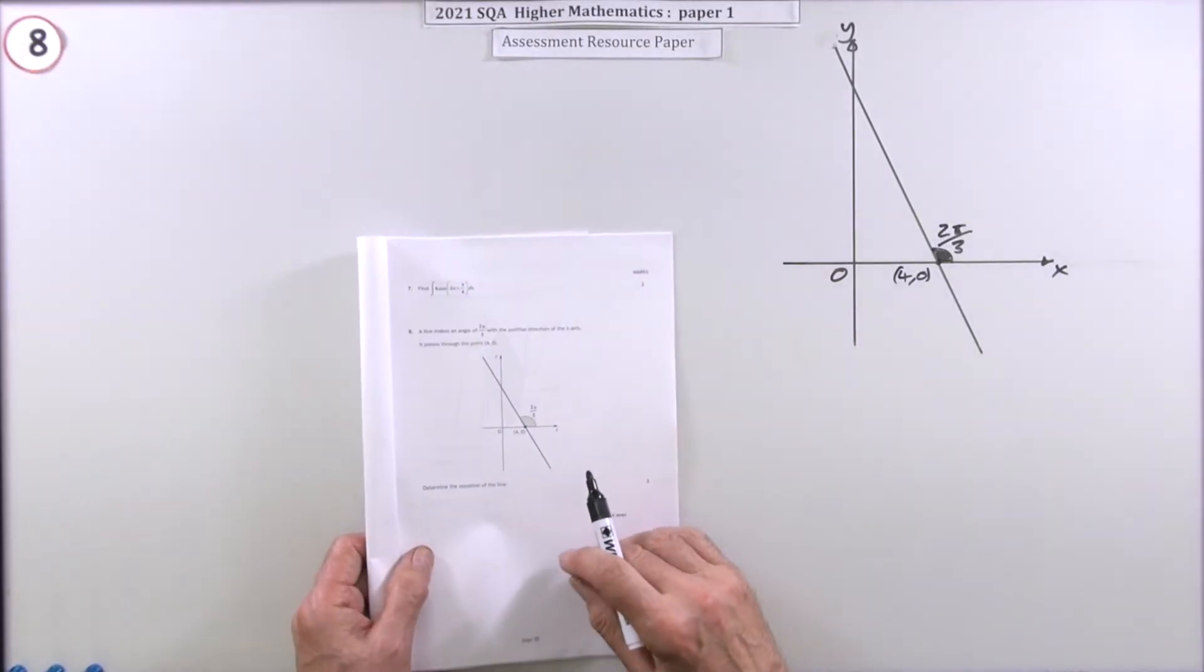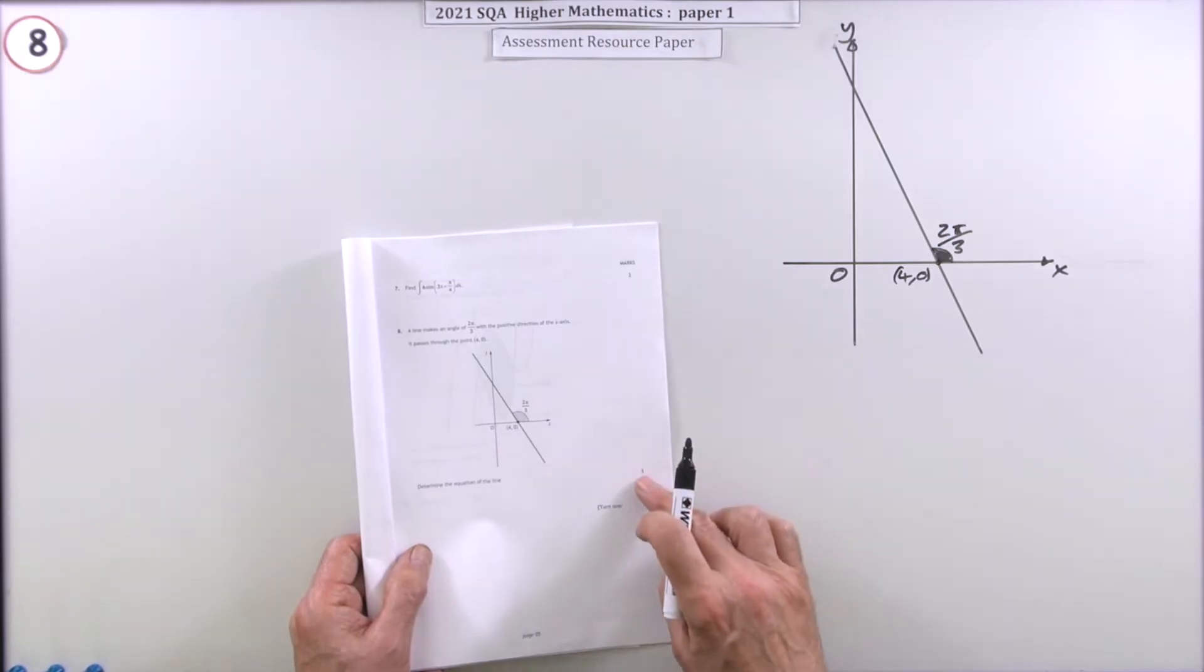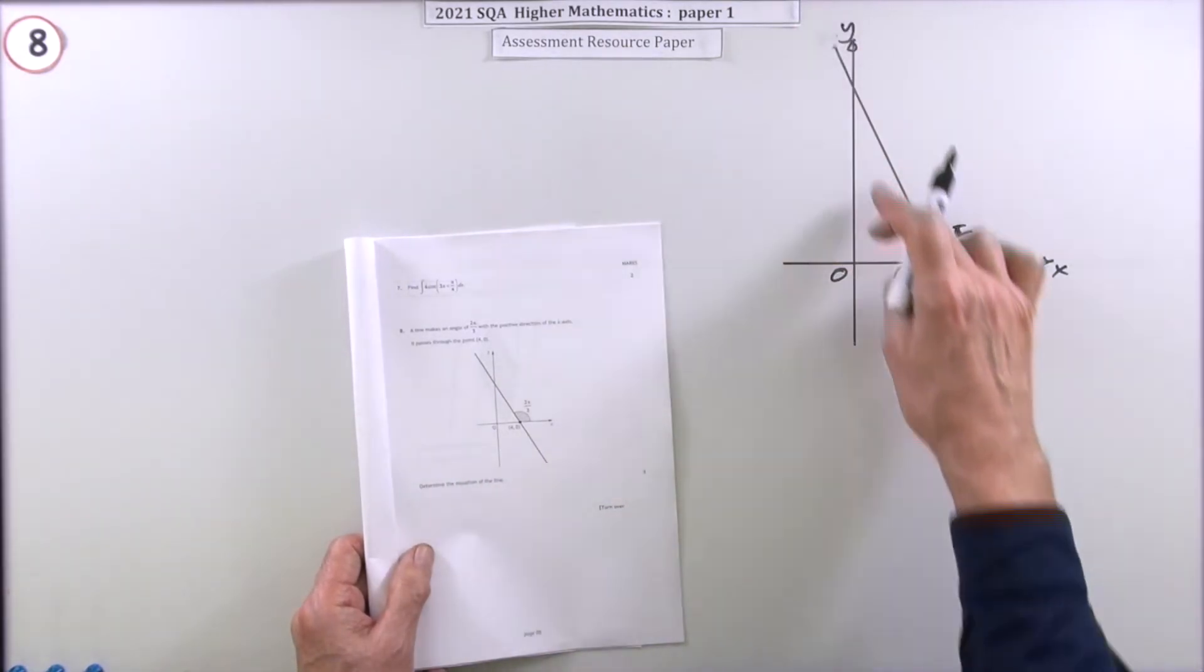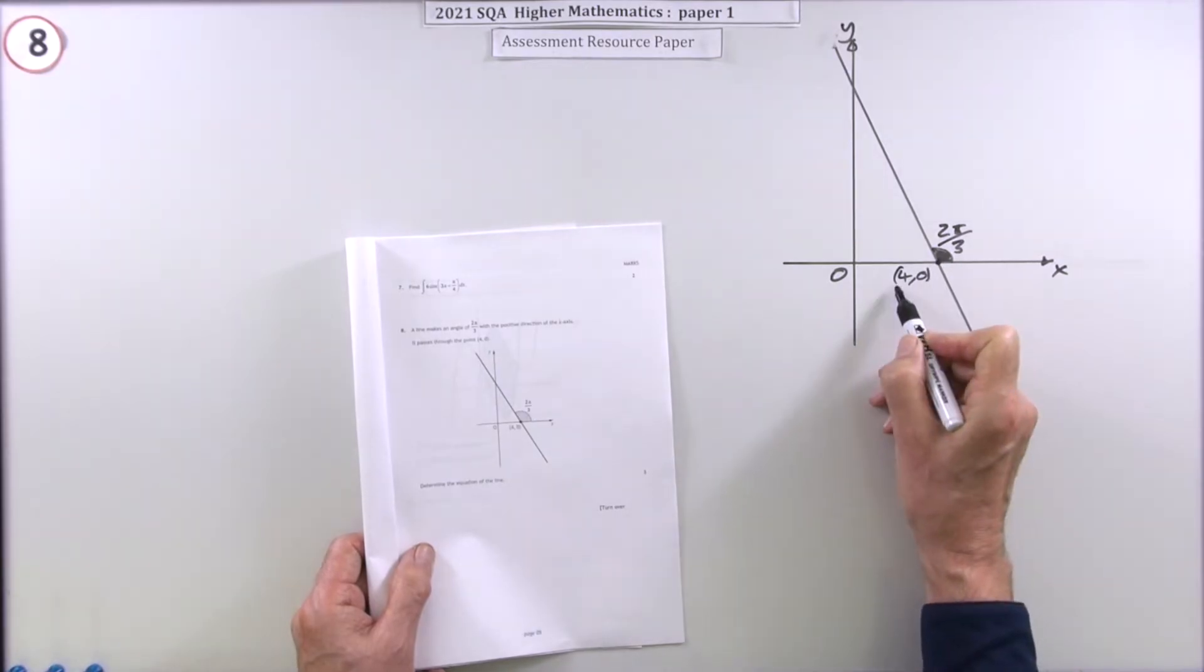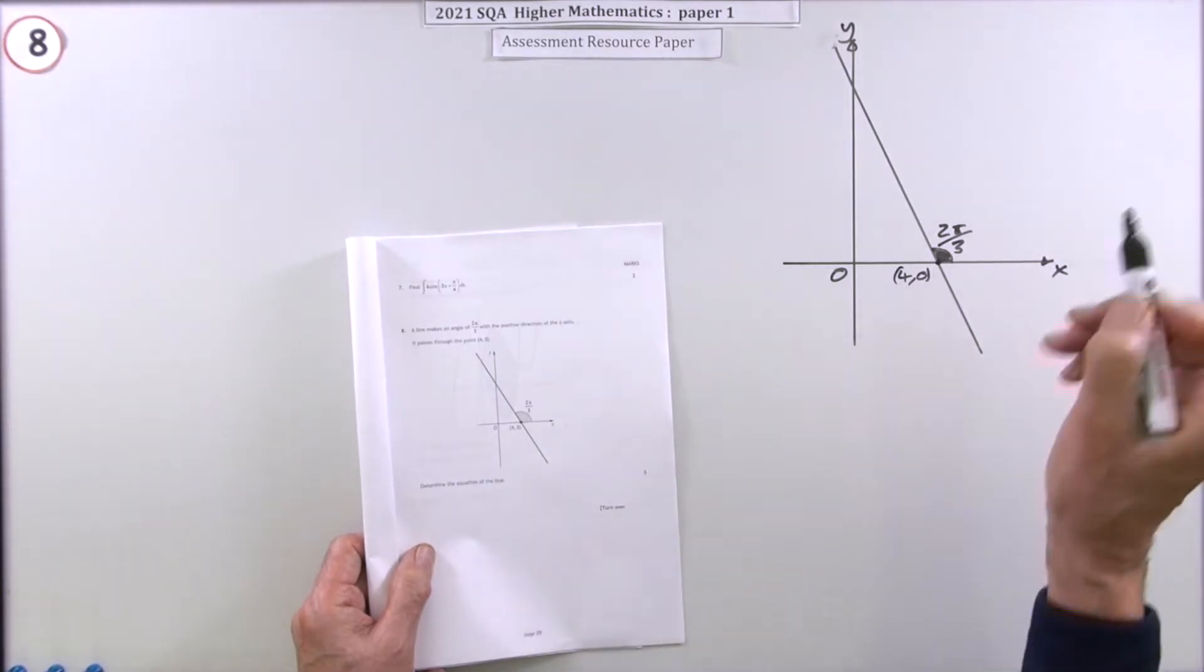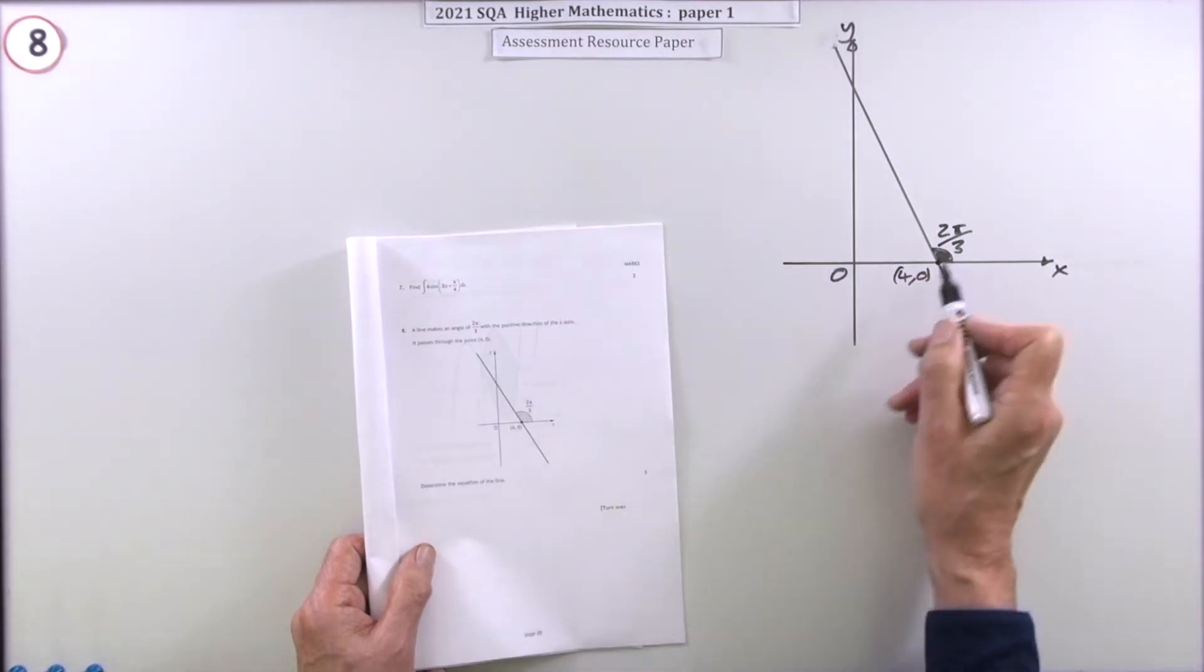Question eight from paper one of the 2021 higher maths resource paper. Three mark question: determine the equation of this line. You're shown this line. There's a point given on the line because you always need that. You need a point on the line, you need its gradient. You're not given the gradient, but you're given the same thing—you're given the angle that it makes to the x-axis.